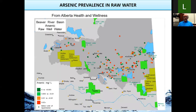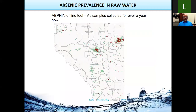Here's a map showing arsenic levels — anything orange and red is above the guideline, greens are below. You can see where you're situated on the map. That data is from Alberta Health and Wellness. There is also an online tool called AFEN from Alberta Health — just search for 'AFEN' and it should come up among the first results. Alberta Health has been collecting trace metals samples for over a year now, so bear in mind this is not the whole picture yet.